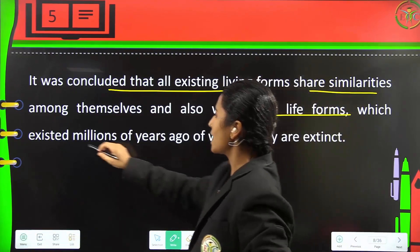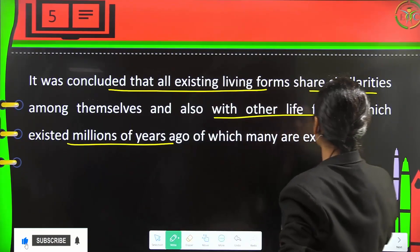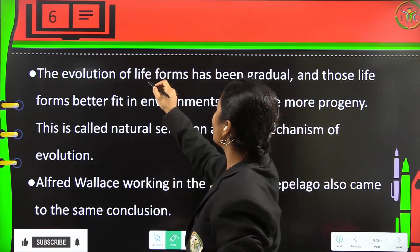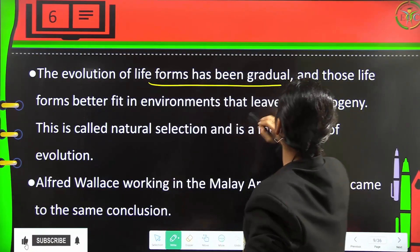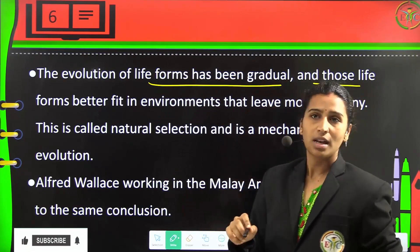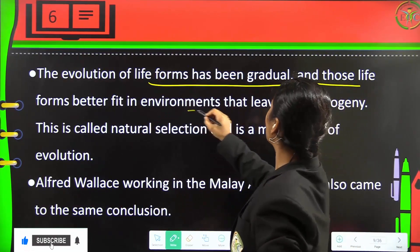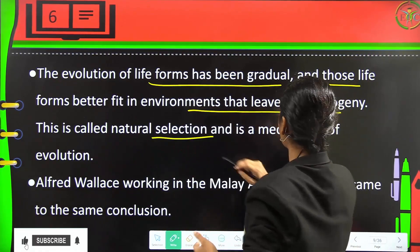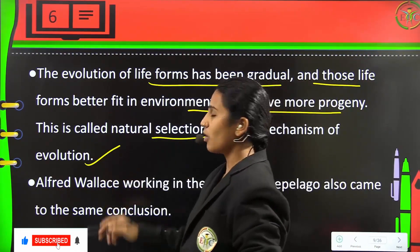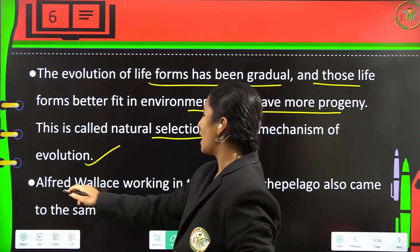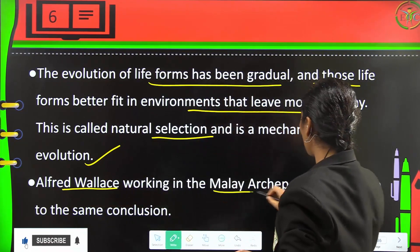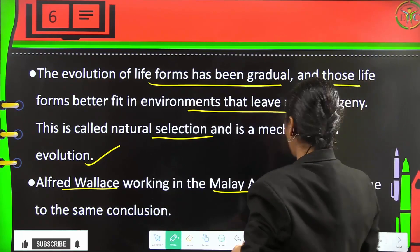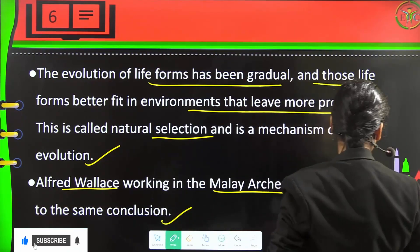It was concluded that all existing living forms share similarities among themselves and with life forms that existed millions of years ago, many of which are now extinct. Evolution of life forms has been gradual, and those life forms better fit to the environment leave more progeny — this is called natural selection, the mechanism of evolution. Alfred Wallace, working in the Malay Archipelago, also came to the same conclusion.